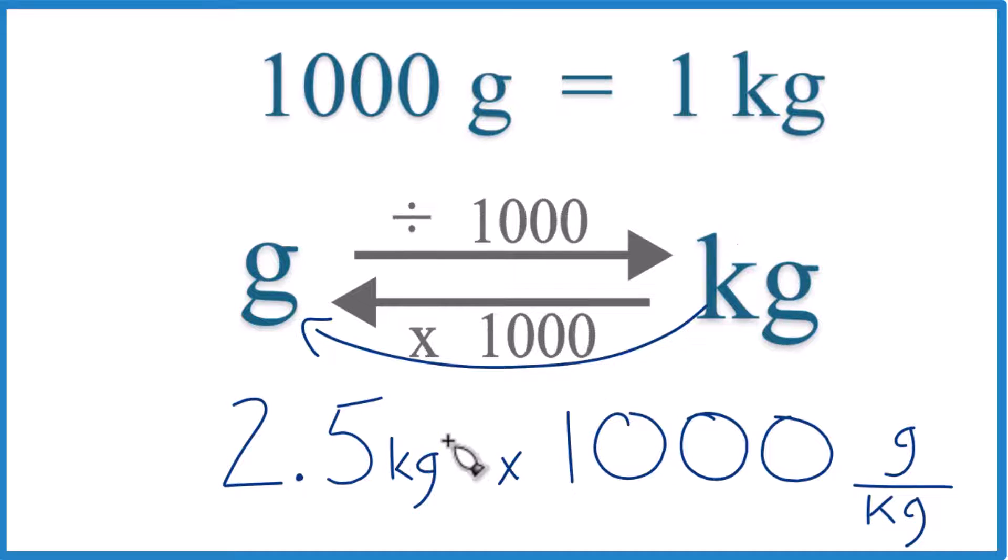But now when we multiply, we have kilograms on the top, kilograms on the bottom. They cancel out. We're left with grams. That's what we're looking for, so we know we set this up correctly.